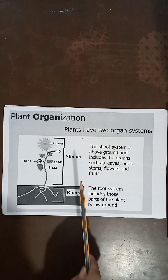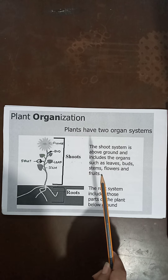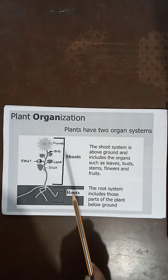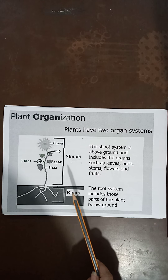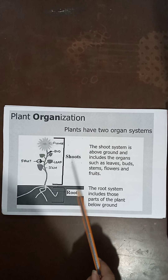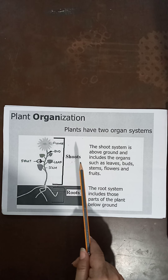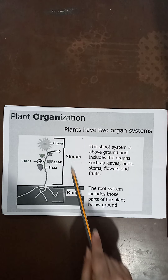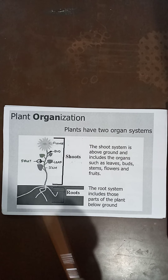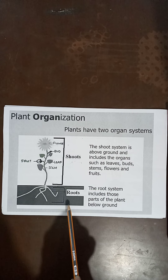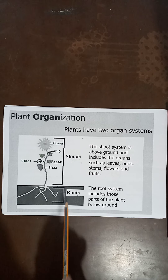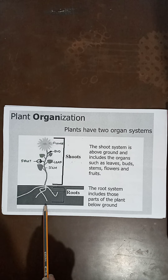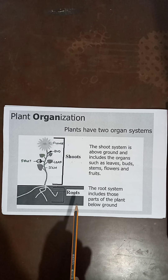A plant body has two main organ systems. One is the upper part of the plant body which you can visibly see and it is above the ground — that is called the shoot. So this whole part is called the shoot system. Another one is below the ground which is not visible to you. This part consists of only one organ, which is the root, and it is called the root system.